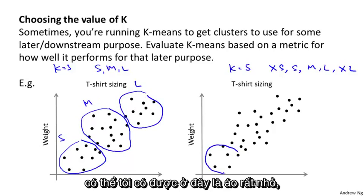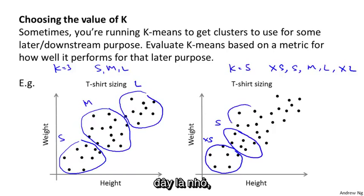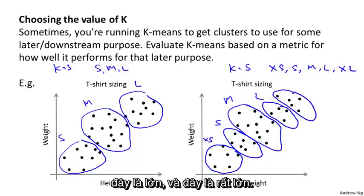Whereas if I run k-means with five clusters, maybe I end up with, those are my extra small t-shirts, these are my small, these are my medium, these are my large, and these are my extra large.